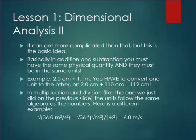Now, multiplication and division, like the one we saw in the previous slide, the units follow the same algebra as the numbers. Here's an example. If I have a measurement of 36 meters squared per second squared, and I square root the entire answer, I square root both the number and the units so that the final answer will be 6 meters per second. Again, like I talked about in the other slide, if you divide measurements, you divide the units, so on and so forth.